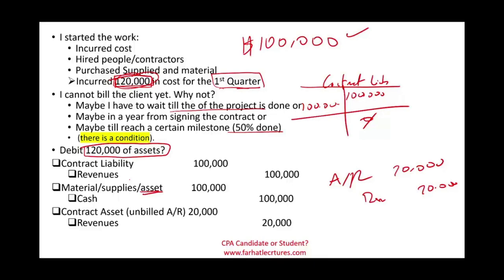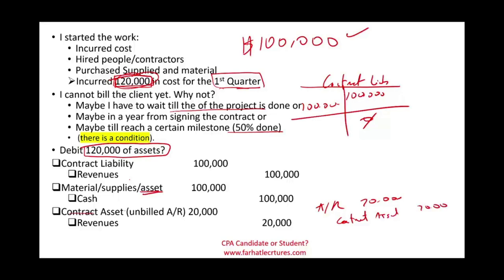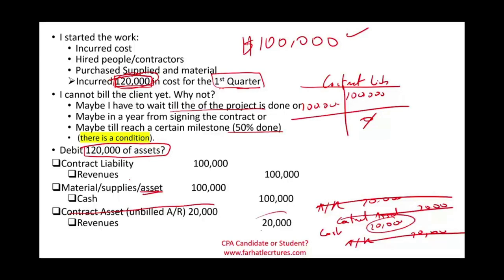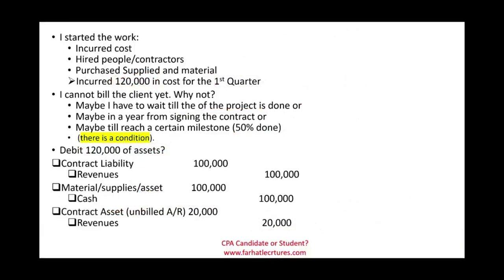Notice how the contract asset is created. Once I can bill the client — let's say I inform the client I incurred an additional $20,000 and they agree to be billed — I debit Accounts Receivable $20,000 and remove the contract asset of $20,000. That asset is removed because now I can bill them. Then once I receive the cash for that $20,000, I debit Cash $20,000 and credit Receivable $20,000, and the accounts receivable is gone. The contract asset is gone. All I have left is cash of $20,000 and revenue of $20,000.